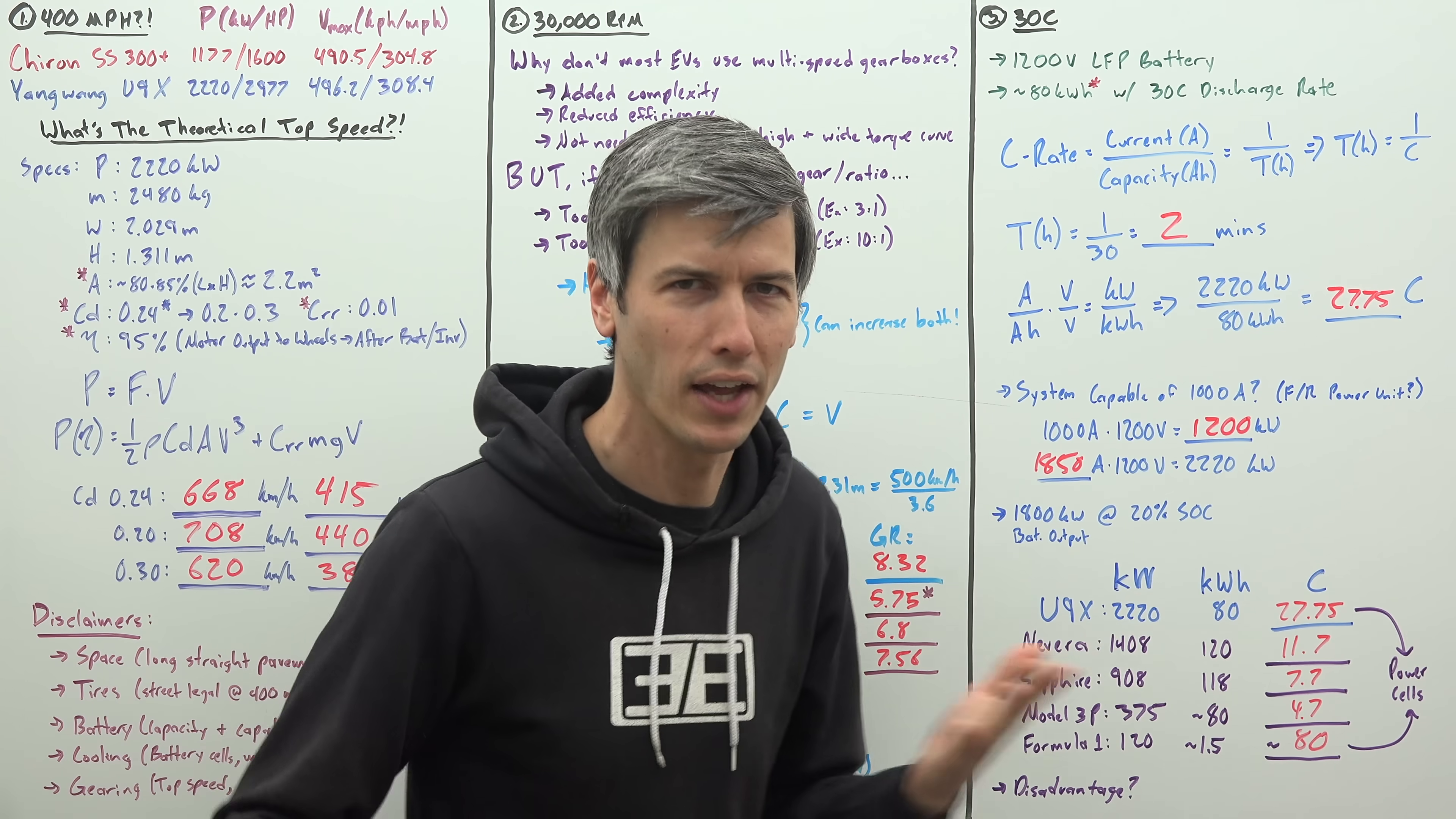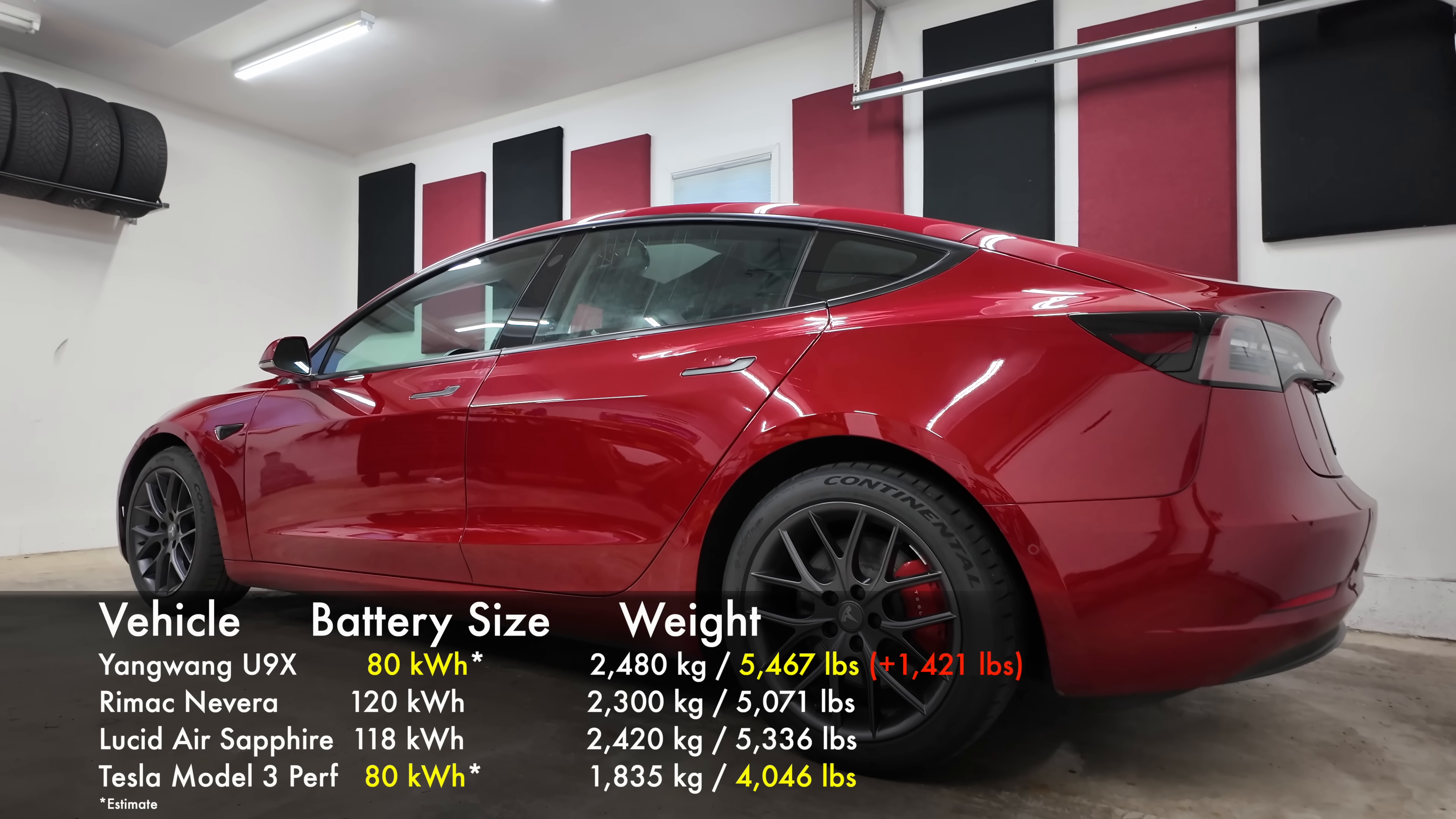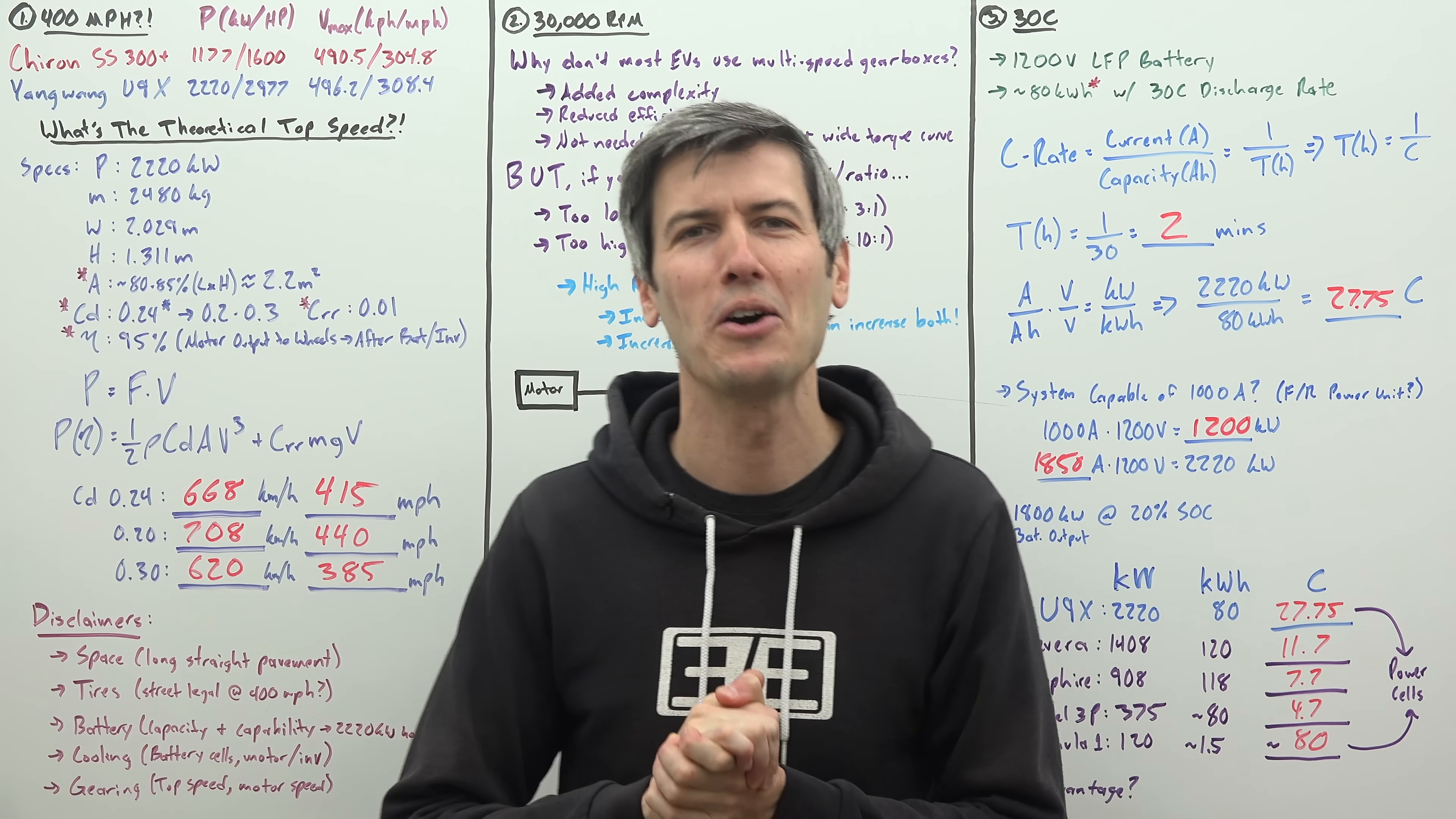So of course, there's got to be a disadvantage here, right? Well, the obvious very big and very heavy disadvantage is just that. Weight. This thing is crazy heavy, especially considering the size of the battery. Well over a thousand pounds heavier than the Model 3 performance, yet with a similar battery size. But LFP batteries do have significant advantages as well, primarily in terms of safety and longevity. The U9X is a wildly impressive vehicle, and there's more to be learned about it, no doubt. If you have any questions or comments, feel free to leave them below. Thanks for watching.